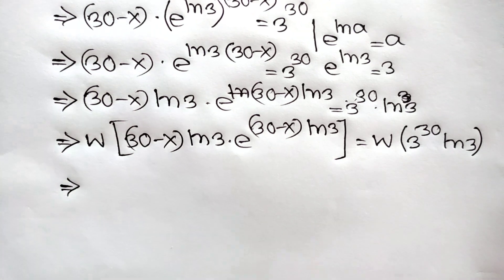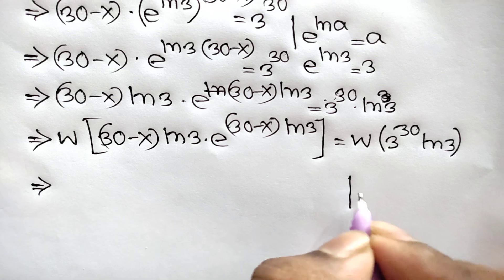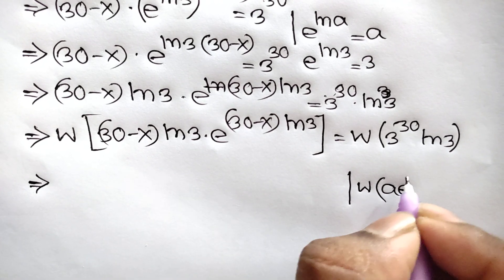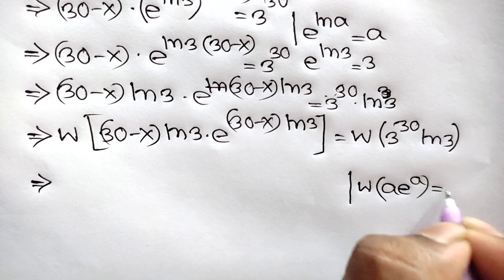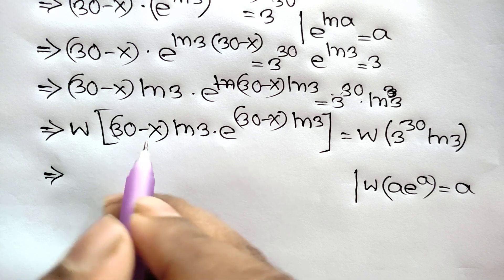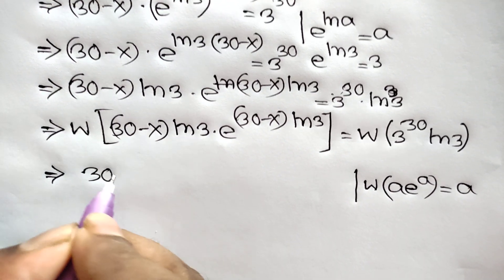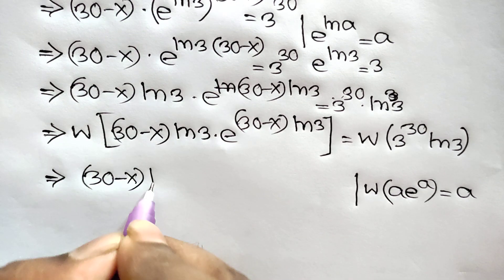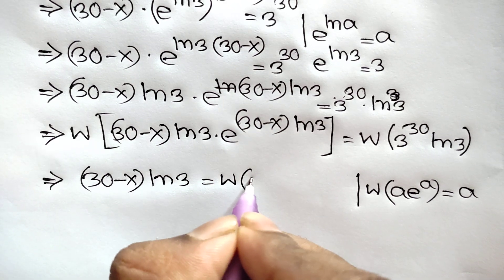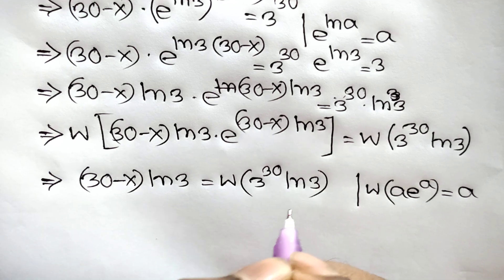According to the Lambert W function, we know that W of a times e to the power a is equal to a. So, letting a equal to 30 minus x times ln of 3, we will get 30 minus x times ln of 3 is equal to W of 3 to the power 30 times ln of 3.